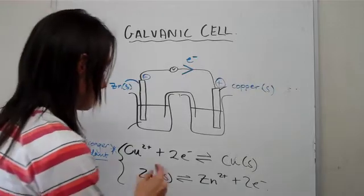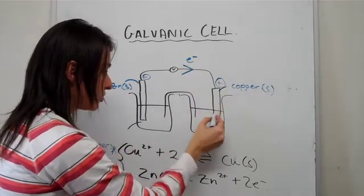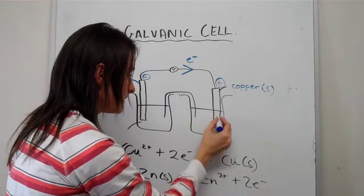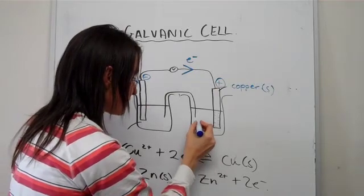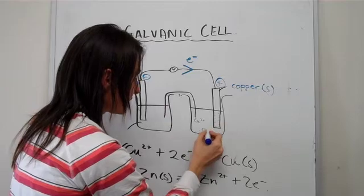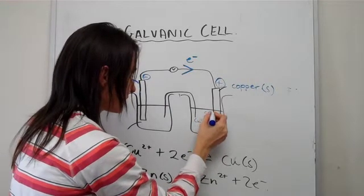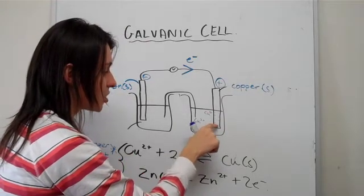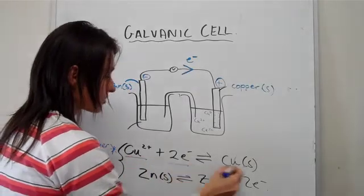As the electrons go to copper and accumulate here, as they start accumulating on the metal surface, inside here we have electrolytes, so we have a high amount of copper ions. Those copper ions are going to be attracted to your electrons, and as you can see, copper ions and two electrons will produce copper solid.